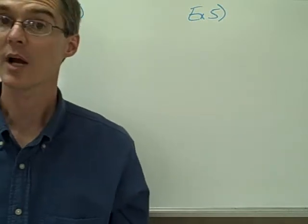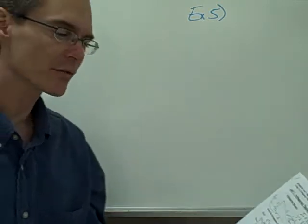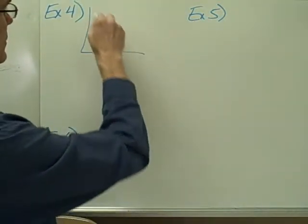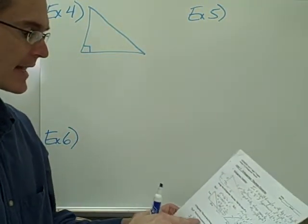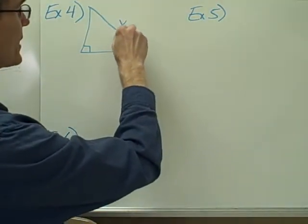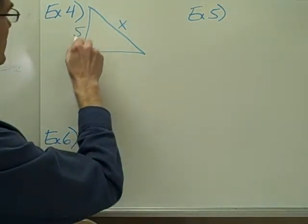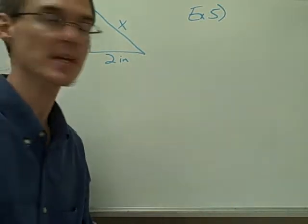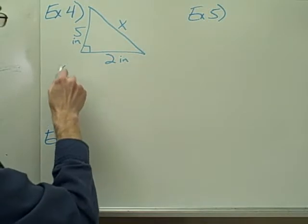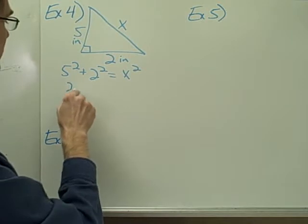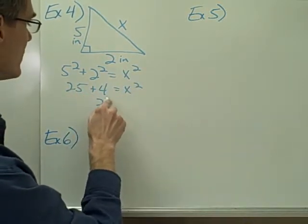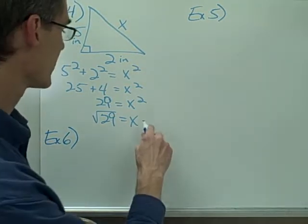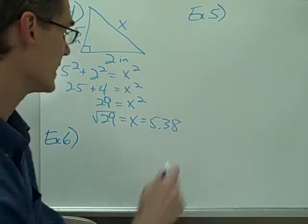Example number four: Find the hypotenuse of a right triangle that has one side of five inches and another side of two inches. I draw a picture of a right triangle, label the hypotenuse X, and the legs five inches and two inches. Five squared plus two squared equals X squared. That's 25 plus 4 equals X squared, so 29 equals X squared, and X equals the square root of 29, which is approximately 5.38 inches.